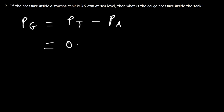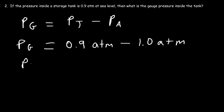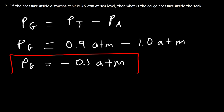The total pressure inside the tank is 0.9 atm, and the atmospheric pressure at sea level is always 1 atm — and keep in mind, 1 atm is 101.3 kilopascals. So the gauge pressure is 0.9 minus 1, which is negative 0.1 atm. A negative gauge pressure means the absolute pressure inside the tank is less than atmospheric pressure; a positive gauge pressure means it is above atmospheric pressure.